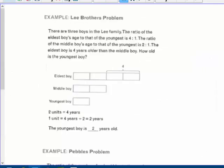Next page. The Lee brothers problem. There are three boys in the Lee family. The ratio of the eldest boy's age to the youngest, so eldest boy here has four bars, to the youngest is four to one. The ratio of the middle boy's age to that of the youngest is two to one, so he has two bars. The eldest boy is four years older than the middle boy, so only this part represents those four years. How old is the youngest boy? So you've got to put the question mark here.